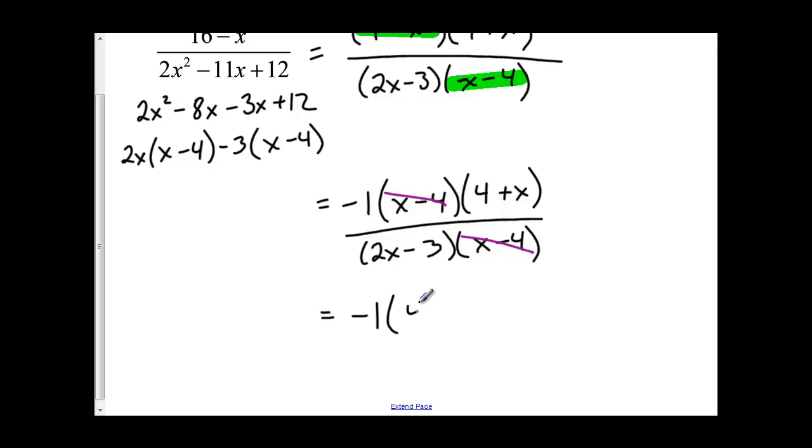So I've got negative 1, 4 plus x, over 2x minus 3. If I wanted to, I could put this negative 1 into my equation. I'm going to get negative 4 minus x, over 2x minus 3.